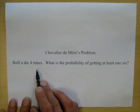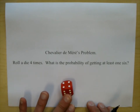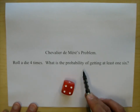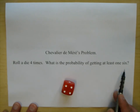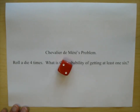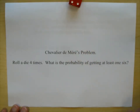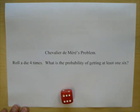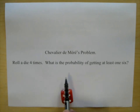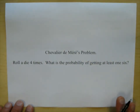Roll a die four times — when they say a die, they mean a standard six-sided die. What is the probability of getting at least one six? The experiment is to roll the die four times. I went ahead and did it — got a two, three, four, six. I got at least one six. That is Demir's problem — the problem that put probability on the map and got Fermat and Pascal writing letters to each other.